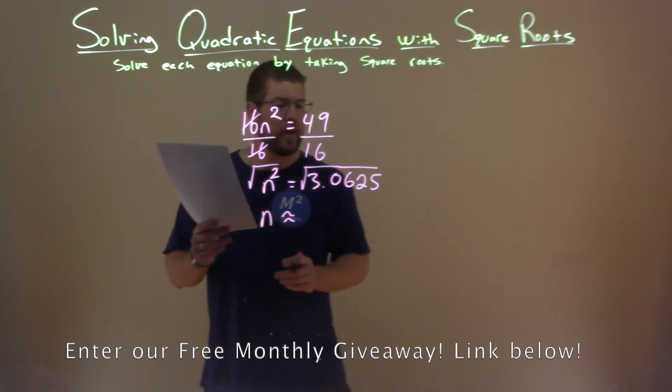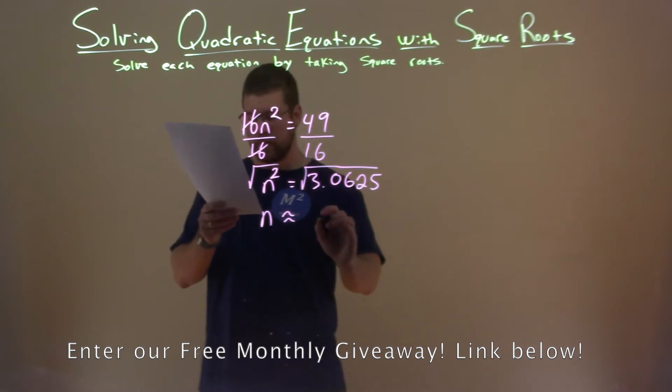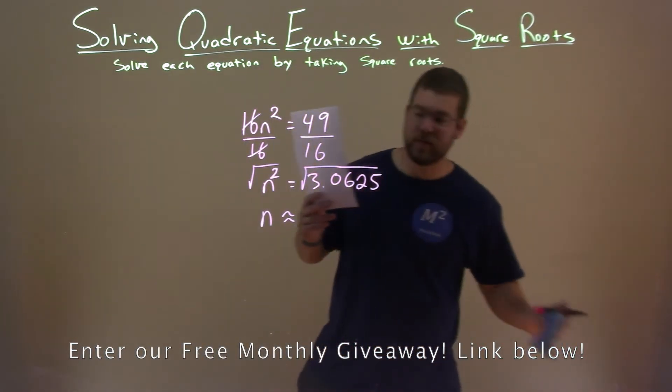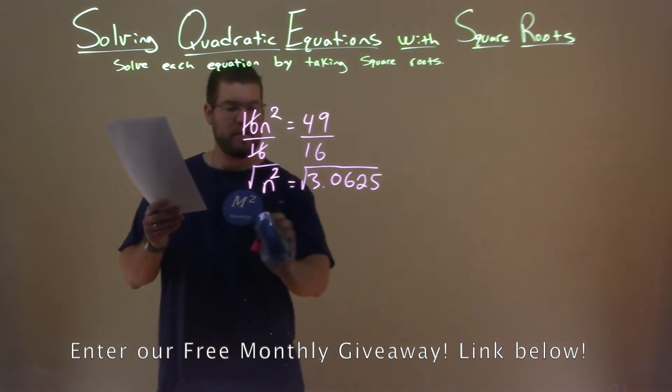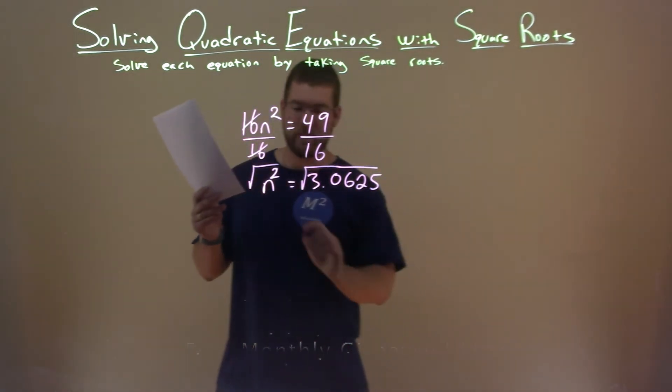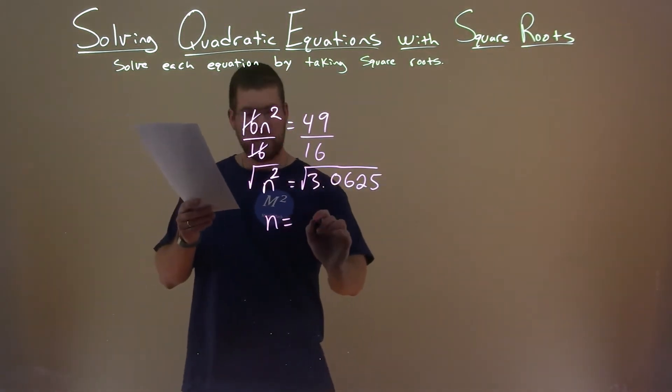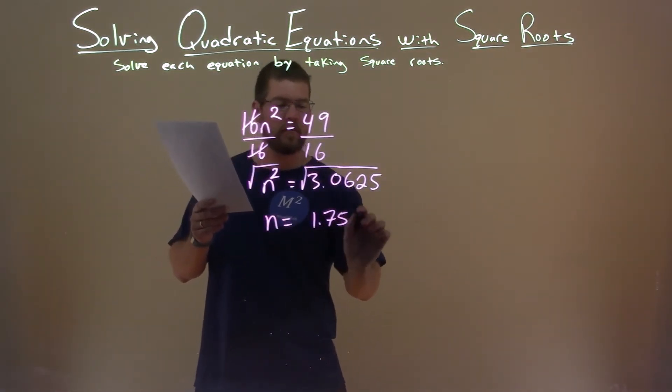So the square root of 3.0625 is approximately, oh no, it's exact. It's exact. That's what I get for thinking too fast. n equals 1.75 here.